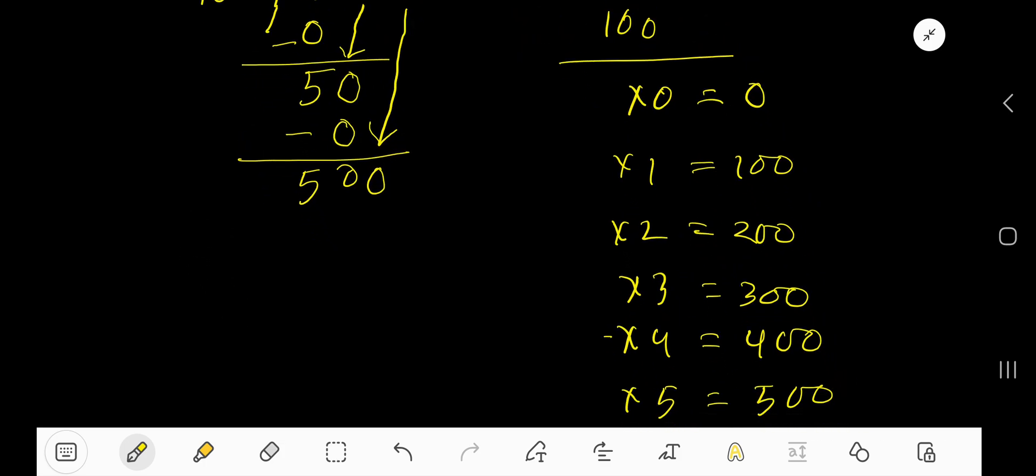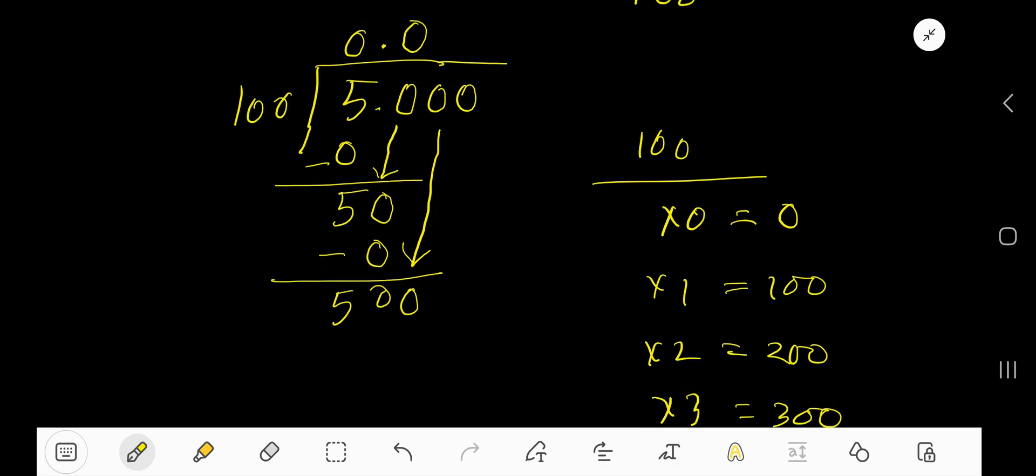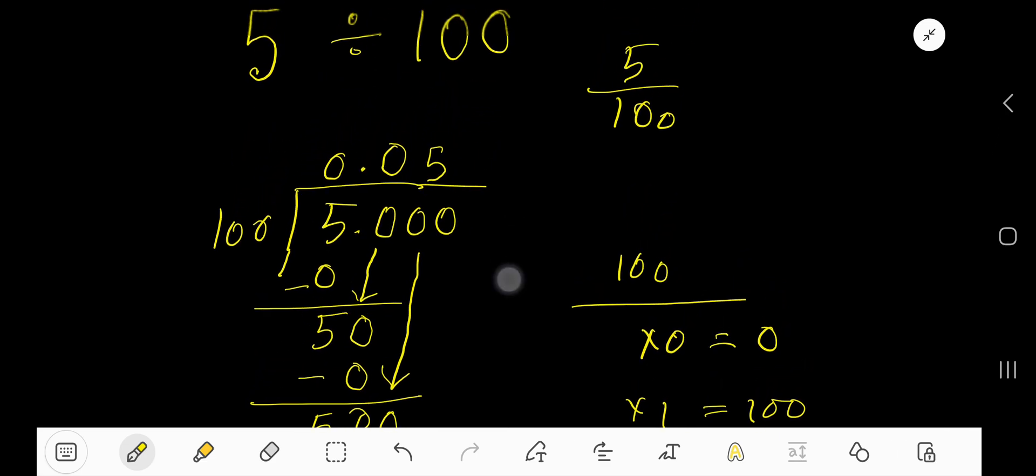That is 100 goes into 500, 5 times. So, right here 5. 5 times 100, 500. So, if you subtract, you will get 0. Take away 500, put 500. So, you are getting 0. That is your result is 0.05, right?